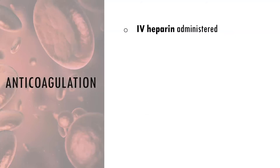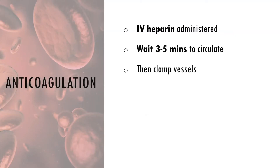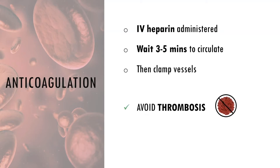Before starting the anastomosis, the patient is given IV heparin, which is allowed to circulate for three to five minutes before the vessels are clamped. This is to avoid thrombosis during manipulation and exposure of the vessels. After both anastomoses are completed, a reversal agent like protamine sulfate may or may not be administered. An anastomosis is a surgical connection between two structures, so this step involves connecting the graft to the inflow and outflow artery.